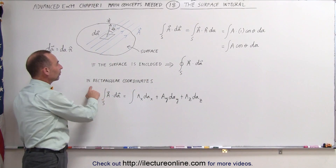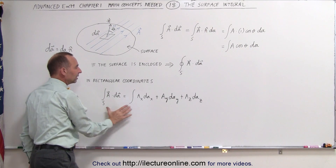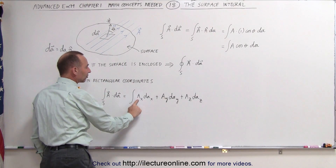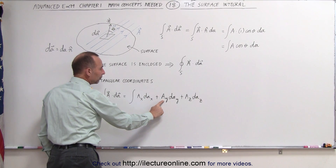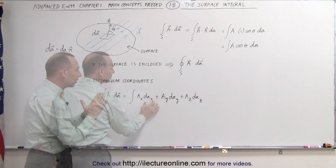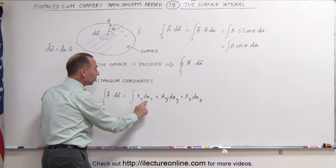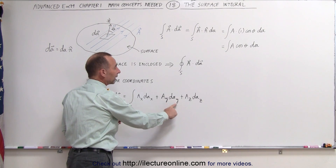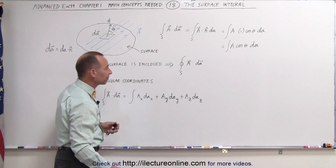If you want to write this in rectangular coordinates, we can write it in this form. Notice we have the x component of the vector field, the y component of the vector field, and the z component of the vector field, times the projection of the area element onto the yz plane, the projection onto the xz plane, and the projection onto the xy plane.